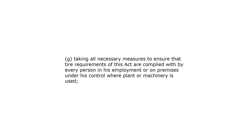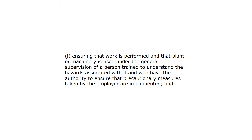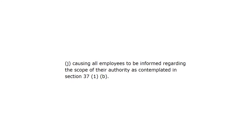Taking all necessary measures to ensure that the requirements of the Act are complied with by every person who is in his employment or on premises under his control. Where plant or machinery is used, enforcing such measures as may be necessary in the interest of health and safety, ensuring that work is performed and that plant or machinery is used under the general supervision of a person trained to understand the hazards associated with it and who has the authority to ensure that precautionary measures taken by the employer are implemented, and causing all employees to be informed regarding the scope of that authority as contemplated in section 37(1)(b).